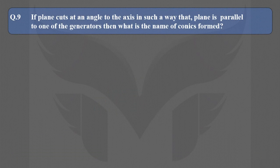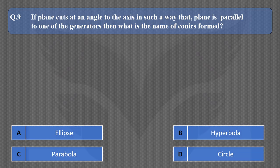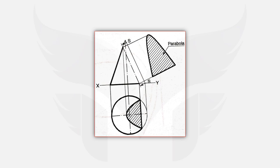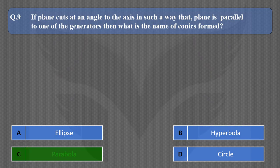Next question: If a plane cuts at an angle to the axis such that the plane is parallel to one of the generators, then what is the name of the conic form? Options are ellipse, hyperbola, parabola, and circle. From previous questions, we know the cutting plane positions for circle and hyperbola, so options B and D are eliminated. In this question, the cutting plane is parallel to one of the generators, and the conic section obtained is a parabola. So the correct option is C, parabola.